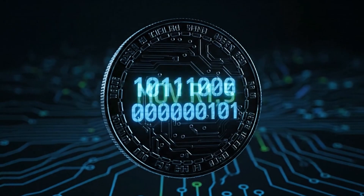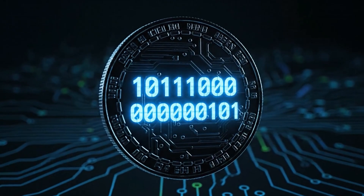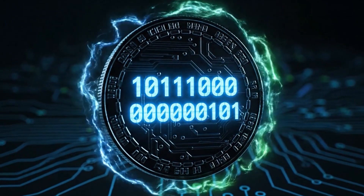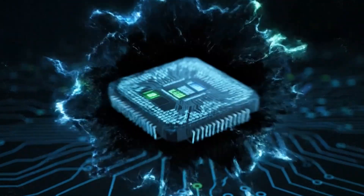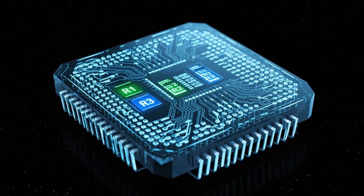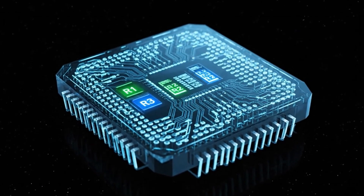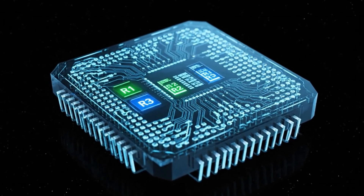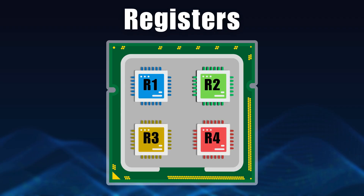When an assembly instruction like "move r1, 5" is written, it's the direct blueprint for the binary that tells the CPU to move the number 5 into the register labeled r1. Registers are tiny, incredibly fast memory cells built right into the CPU. That's where all the actual calculations happen.